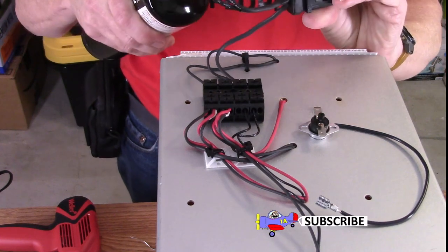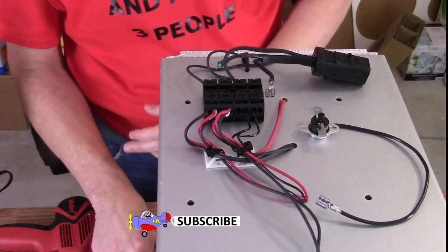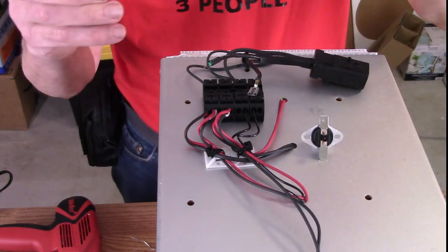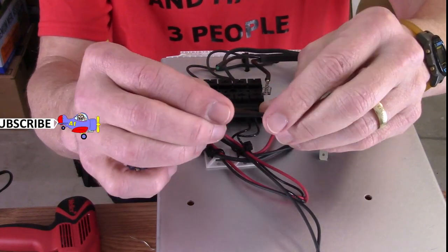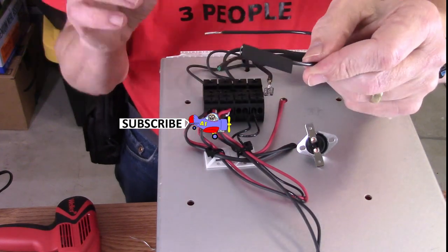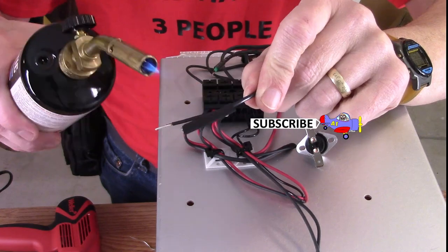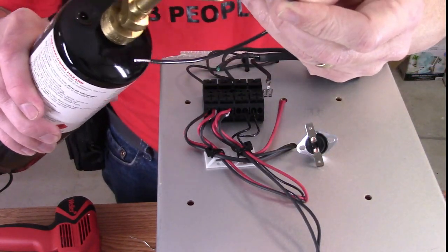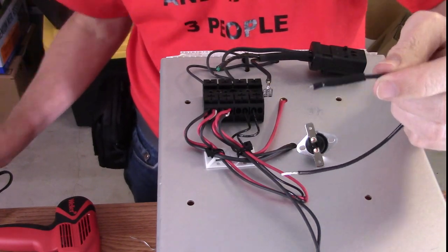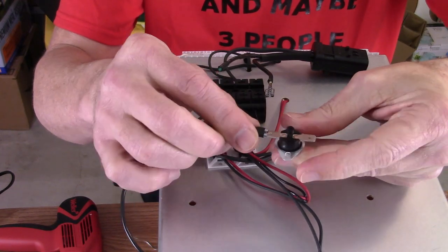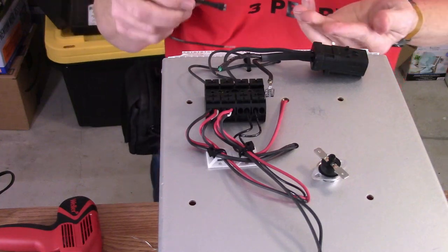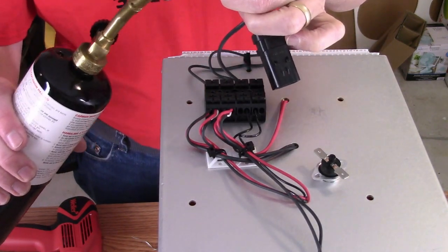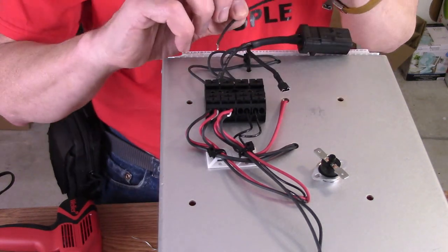I'll just shrink that down a little bit. There we go. Then I'm going to cover these fittings. I guess I could use the heat gun instead. That will be able to slip on there and still be partially covered.